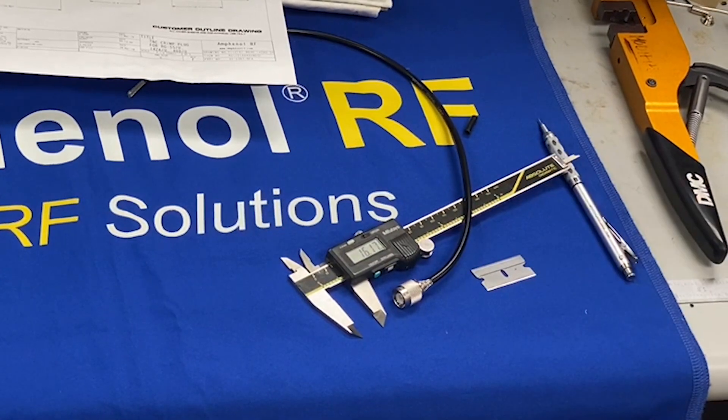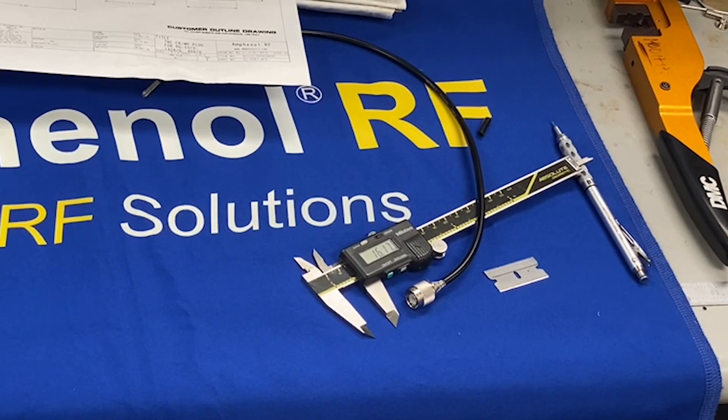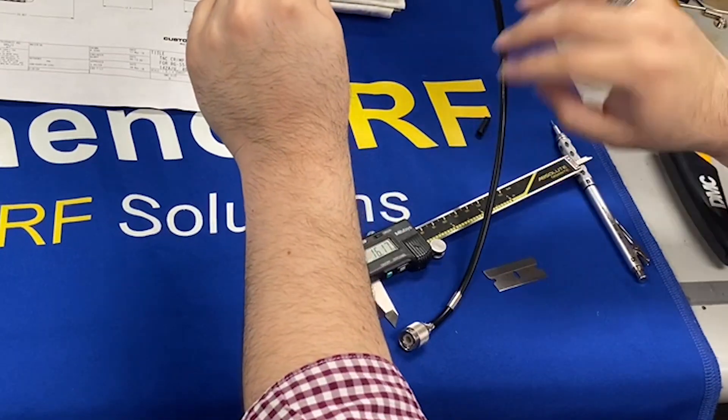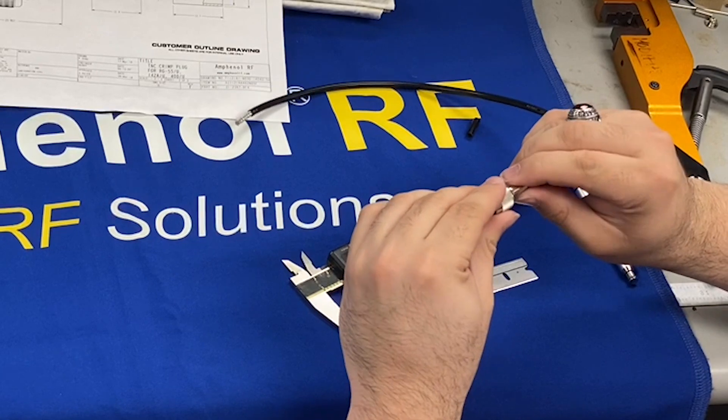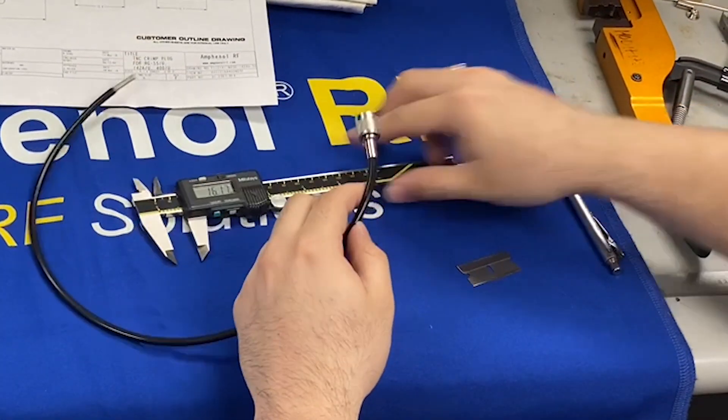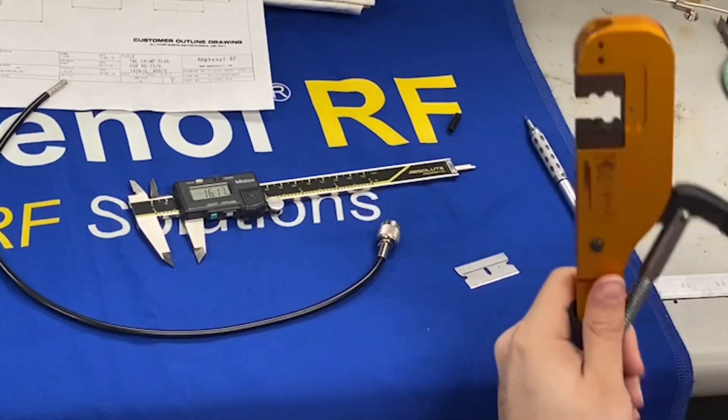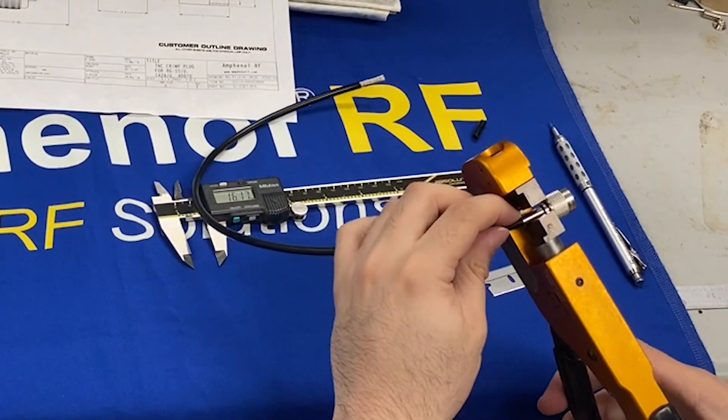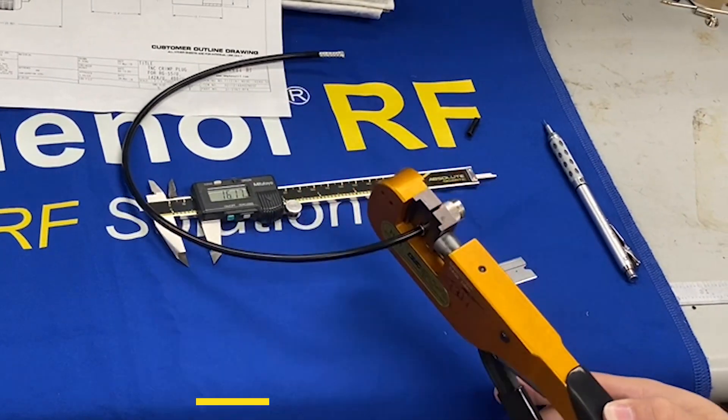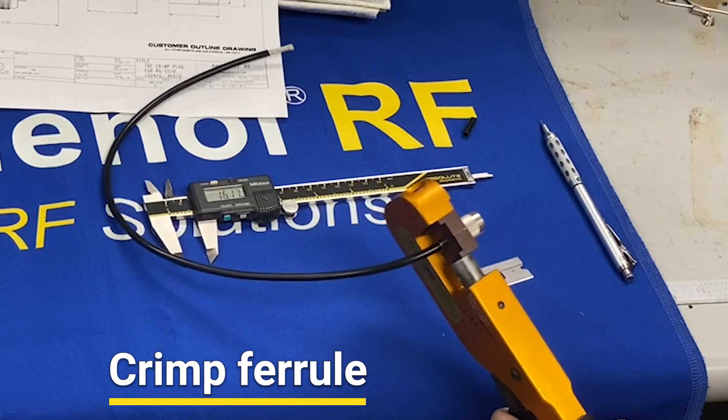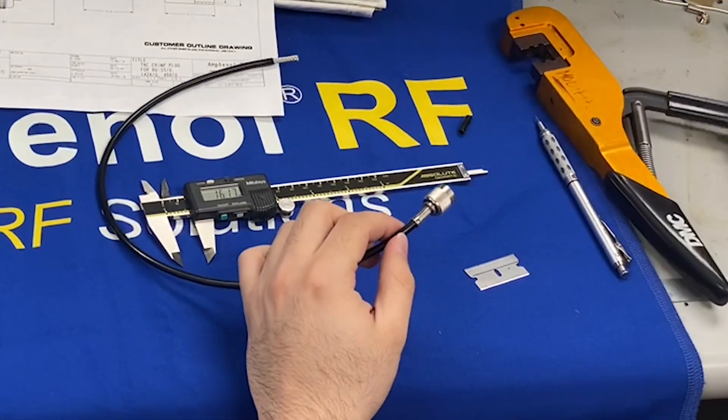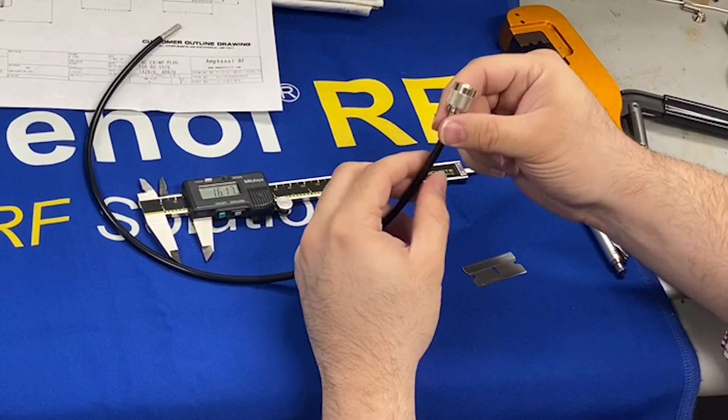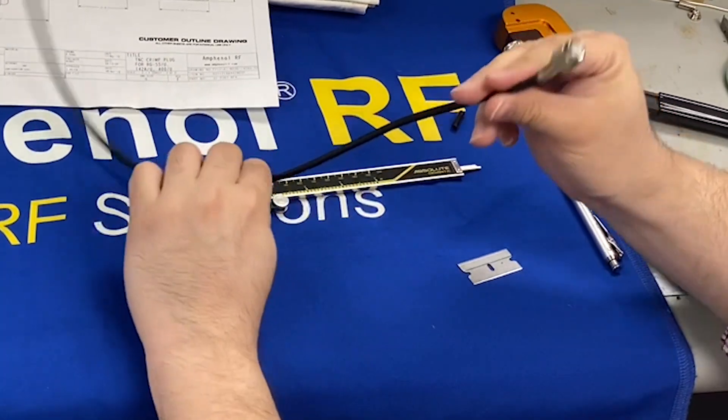We will cut here. And the ferrule is now slid forward and pushed flush to the connector body. We then take the second stage of our die here, the larger of the two. Insert our connector. So it rests, the die rests flush up to the back of the connector body. And again, squeeze. And it will automatically release. And now we have a crimp with the hex going up to the body and a slightly uncrimped area of the ferrule at the back by the cable exit point. And your cable is now connectorized.